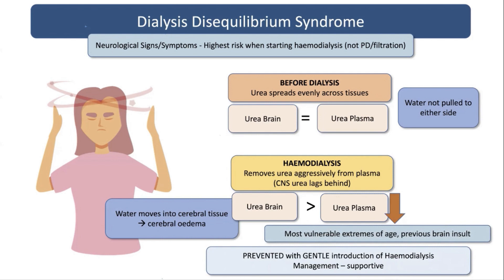We still see it on occasion, and it's particularly in patients at extremes of age — so pediatricians might see it, and it can occur in very elderly patients too. Additionally, patients who have had a previous stroke or brain injury seem to be predisposed. So it's still something to know about.